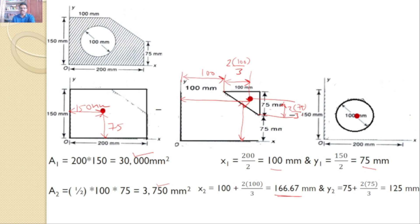And y2, that is I want the distance from this to this. So this value is 75, and you know this value is 2 into 75 by 3. So the total distance y2 becomes 75 plus 2 into 75 by 3, which gives the value of 125 mm.